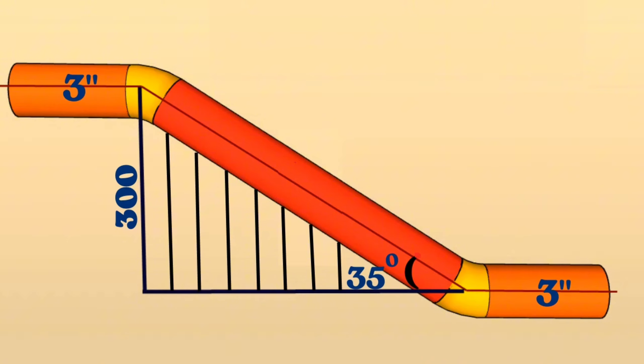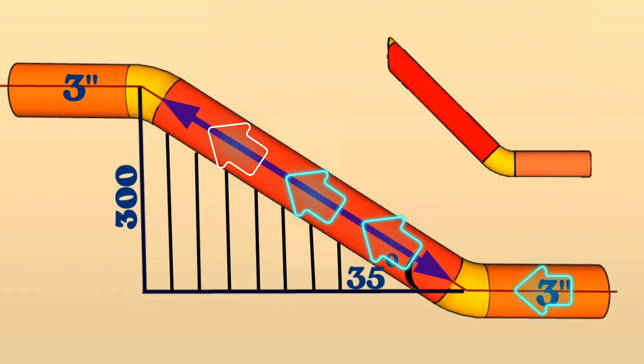As you see this is a 3 inch pipe line. We will calculate the length of the red color 3 inch pipe piece used in the fabrication of this pipeline. As you see, the pipeline comes horizontally, then goes up at a 35 degree angle and continues horizontally again at height of 300 millimeters.